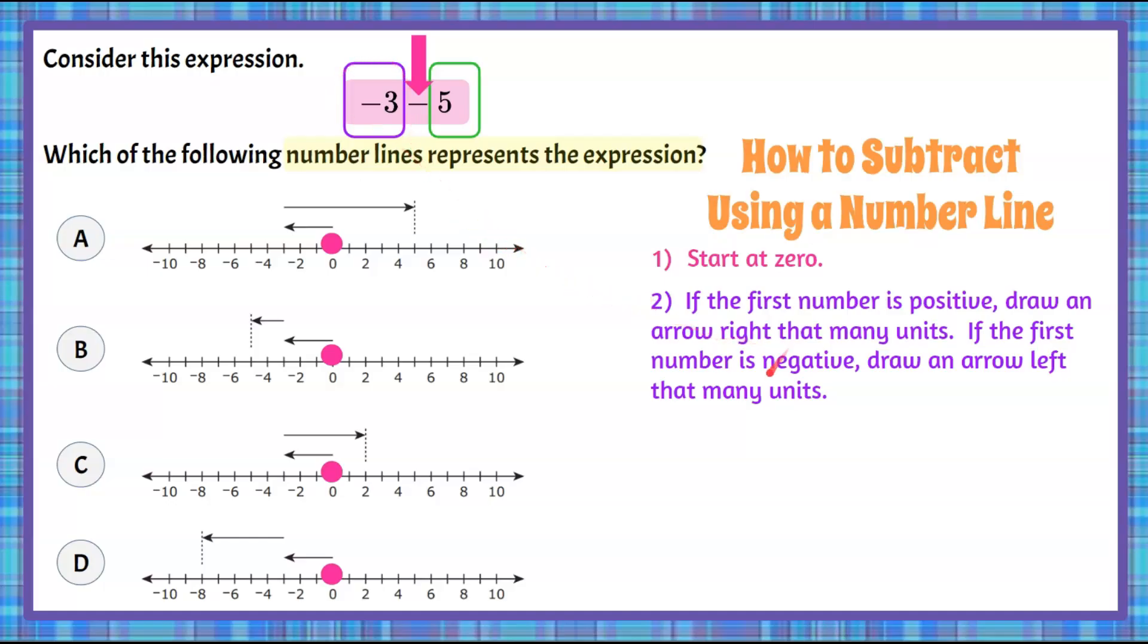That means we're going to go, because it's negative, we're going to draw an arrow left three units. So starting at 0 right here, we're going to go left three units, and it matches choice A. Here, starting at 0, we're going to go left three units. It matches. Starting at 0, left three units. Starting at 0, left three units. So we can't even eliminate any of our four answer choices, because they all began at 0 and went left three units.